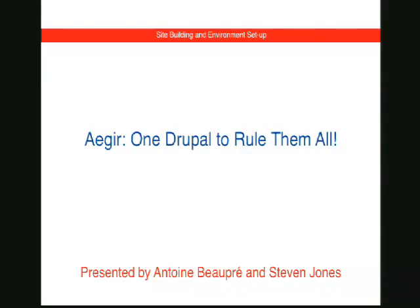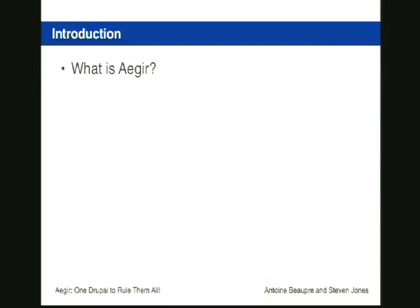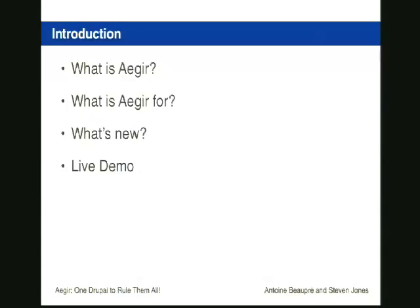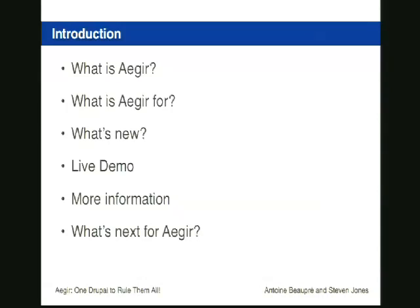This is going to be a very high-level overview of Eiger. We're going to talk through what Eiger is and what it can do for you. We'll then talk about what it's for and the problems it will actually solve in the Drupal space, what's new with Eiger in the last few years, and what pain points that you may have heard about that are no longer pain points. Antoine is then going to show a live demo, and then I'll give you more information on where to go next. Finally, we'll outline roughly what we think is next for Eiger, where we're going and where we're planning to take it.